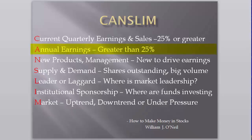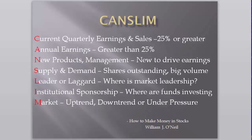The A in CAN-SLIM stands for annual earnings and reminds us that we should be looking for stocks that have an average of at least 25% annual earnings growth over the past three to five years. The N in CAN-SLIM stands for New — New Products, New Management, or perhaps New Market Conditions. The N reminds us that we need something new and exciting to sustain longer-term profit. The S in CAN-SLIM stands for Supply and Demand, and reminds us that we want to favor stocks that have an average daily volume of at least 500,000 shares and trade at least 140% of their average daily volume on the day that they break out.